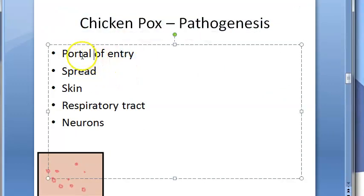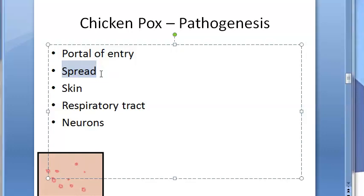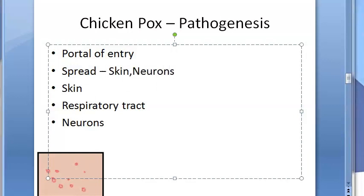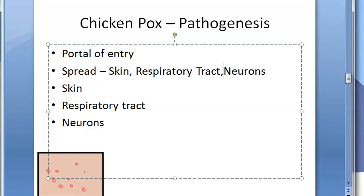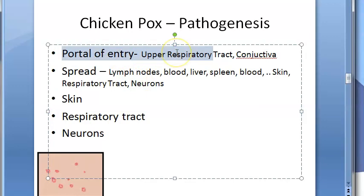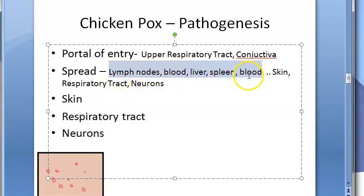The pathogenesis of chickenpox: the port of entry is through the upper respiratory mucosa or conjunctiva. The virus replicates in the regional lymph nodes, spills over into the blood, travels to the liver and spleen, then re-enters the bloodstream as secondary viremia. It then goes on to infect the skin, neurons, and respiratory tract.